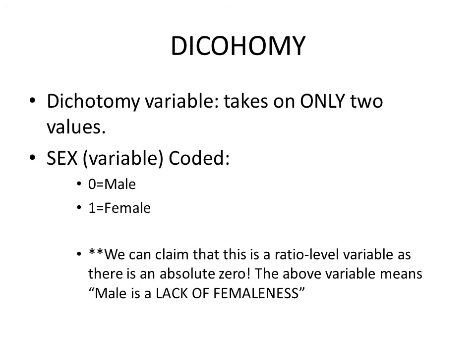A dichotomous variable takes on only two values. For example, with sex, we could code zero equals male and one equals female, claiming it is a ratio level variable because there is an absolute zero — meaning male represents a lack of femaleness. We can also reverse this: zero equals female and one equals male, meaning female represents a lack of maleness.